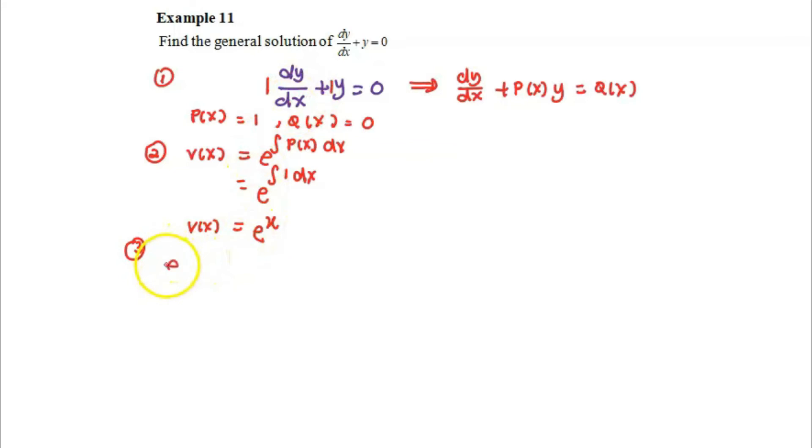We will be having e of x dy dx plus e of x multiplied with the second term y equals to e of x times 0, the term on the right side. So we have e of x dy over dx plus e of x y equals to 0.